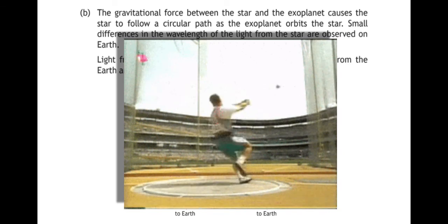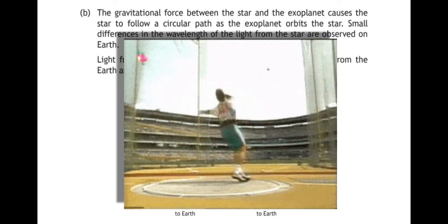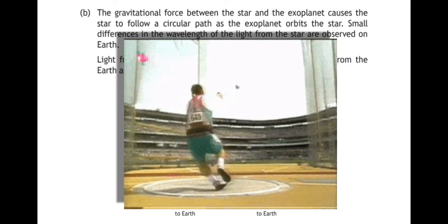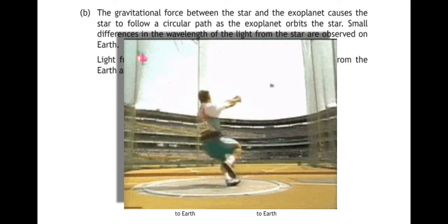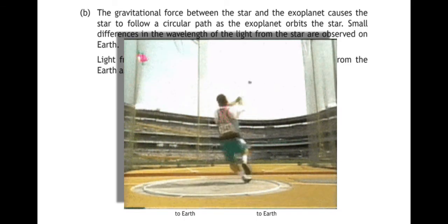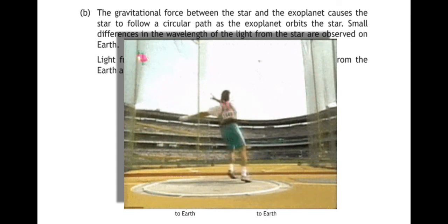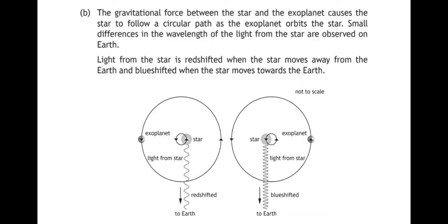A nice way of explaining it or seeing that sort of effect on Earth is where someone throws the hammer at the Olympics or something. And you can see in order to maintain their balance, the hammer thrower leans away from the hammer and they pivot around about their position.